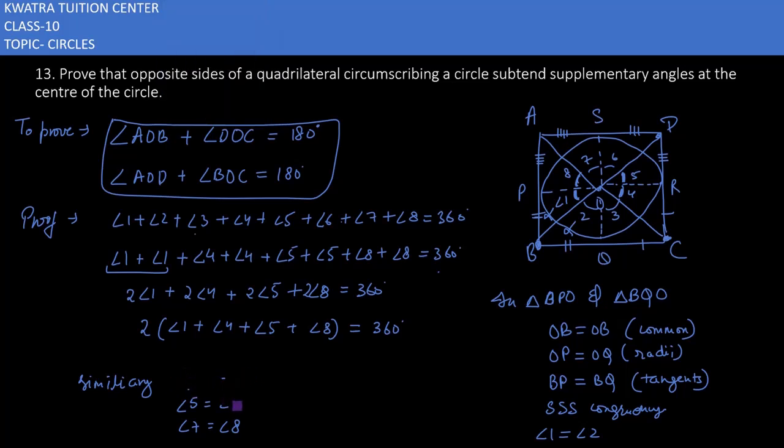You will have angle 1, angle 4, angle 5, angle 8 is equal to 360. Now you can see, angle 1 and 8 is equivalent to AOB. Because if you can see 1 and 8, we will add. This can be considered as AOB. Twice of AOB. Plus, then you have twice of 5 and 4. 5 and 4, we will read, it can be DOC. Is equal to 360.